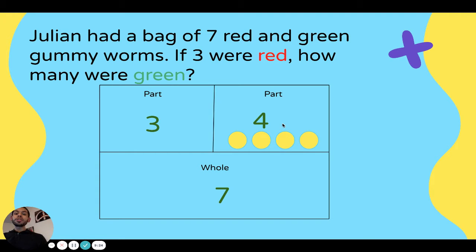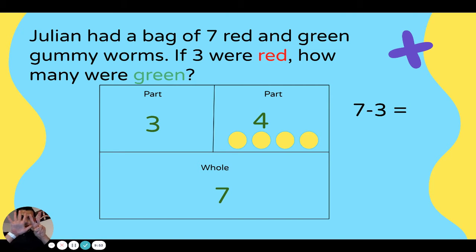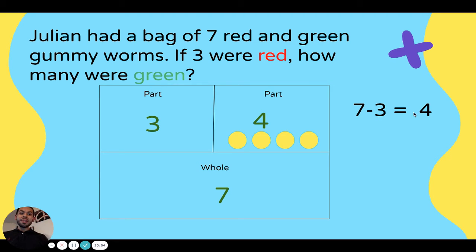Or you can subtract. Take your whole and subtract the part that you know. Our whole is seven and we know one part is three, so we can subtract three from seven. Seven minus three — put up seven fingers, take three down: one, two, three. We're left with four. Seven minus three equals four. So if you know the whole and one part, you can count on to the whole number, or take the whole and subtract the part you know to get the missing part.